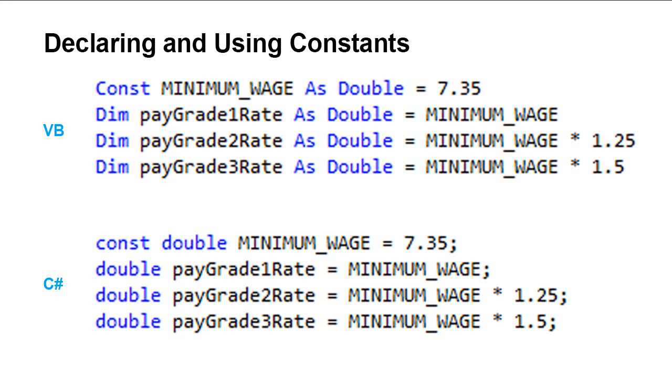Now we would use each of these values in mathematical formulas, so I have three variables called pay grade 1 rate, pay grade 2 rate, and pay grade 3 rate, in which I'm using that constant minimum wage in some type of calculation.